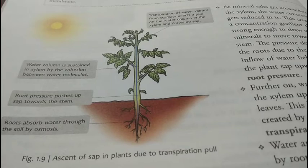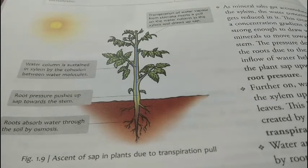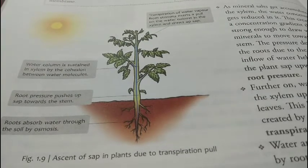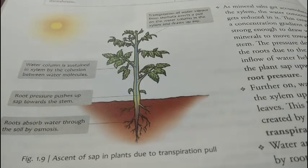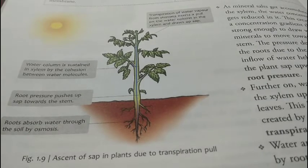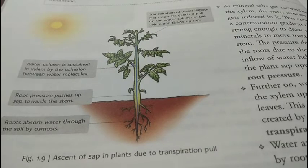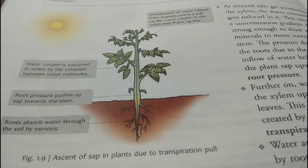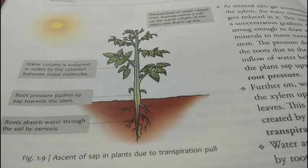Water और minerals जो roots ने absorb किया है, xylem उसे ऊपर के तरफ ले जाता है और stem, leaves, flowers सब जगह बाँटता है। नीचे से ऊपर तक water along with minerals का यह movement — इसे ही ascent of sap कहते हैं। पूरे process को summary में: सबसे पहले roots ने water और minerals absorb किया, xylem तक पहुँचाया, और xylem ने ascent of sap किया।